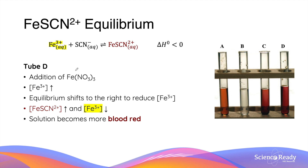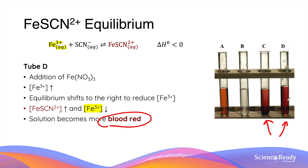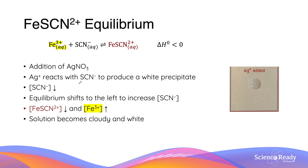In test tube D, we are adding iron nitrate, which increases the concentration of iron 3+ ions. Like before, this shifts the equilibrium to the right in order to reduce the concentration of iron 3+. This causes the concentration of iron thiocyanate ions to increase and iron 3+ to decrease, making the solution appear more blood red. Looking at the diagram, the colours of test tubes C and D look very similar.